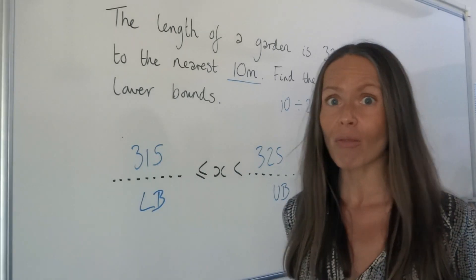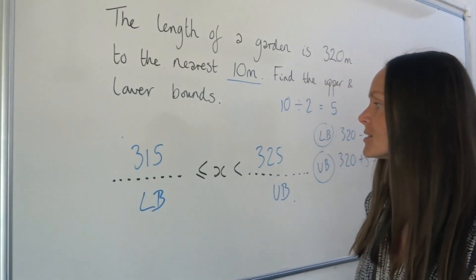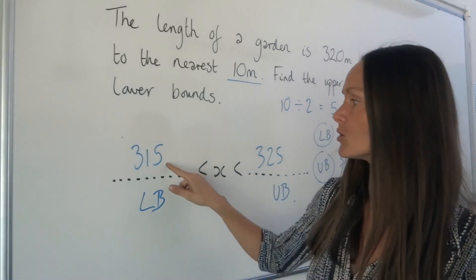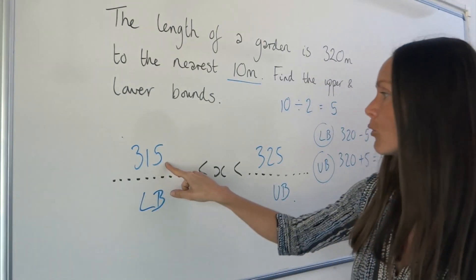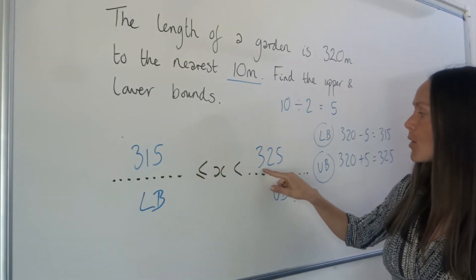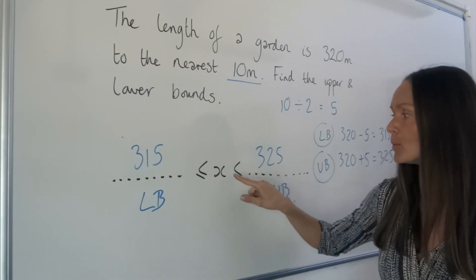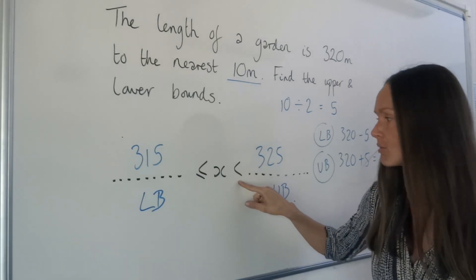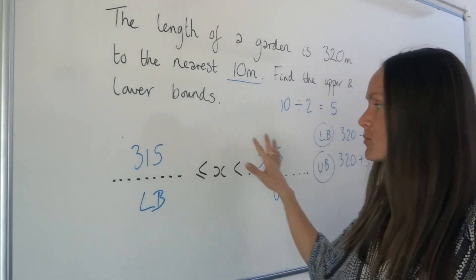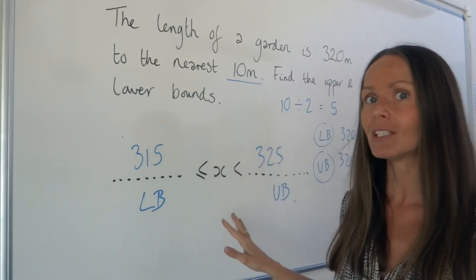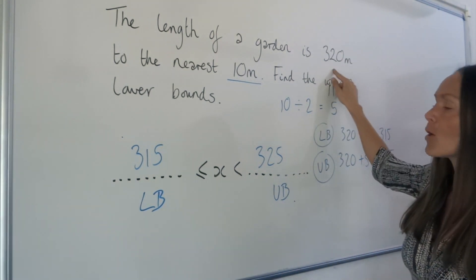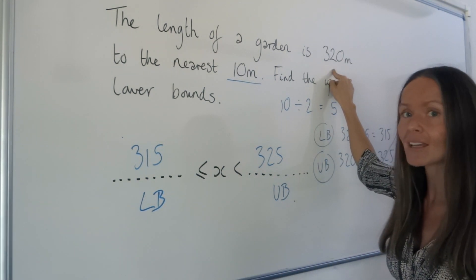Just remember what that actually means: the garden could have been 315 metres, or anything up to 325 metres but not including 325. When you round any of those measurements in that region to the nearest 10 metres, it gives you 320.